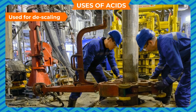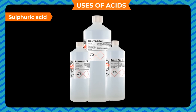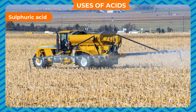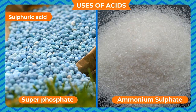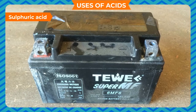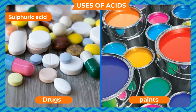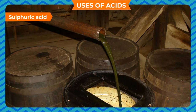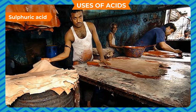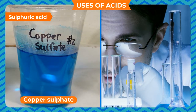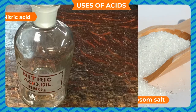Hydrochloric acid is used in preparing aqua regia with nitric acid in the ratio 3:1, and in oil industries for dissolving oil-bearing rocks. Sulfuric acid, also known as oil of vitriol, has the chemical formula H2SO4. It is called the king of chemicals due to its wide use. Its uses include: manufacture of fertilizers like superphosphate and ammonium sulfate, automobile lead-acid batteries, manufacturing artificial silk, plastics, paints, drugs, and detergents, refining of petroleum, and use as a dehydrating agent.